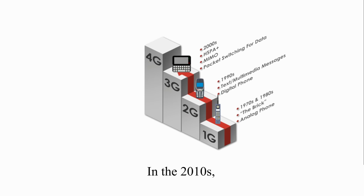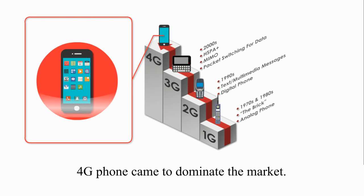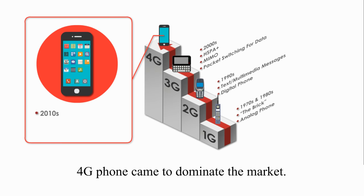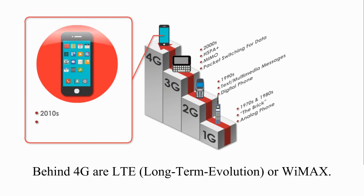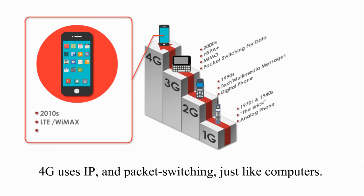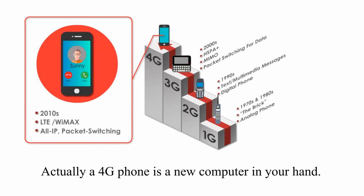In the 2010s, 4G cell phones came to dominate the market. By the end of 2018, pretty much everyone except grandma and grandpa is using 4G cell phones. Behind 4G are LTE or WiMAX. 4G uses IP and packet switching just like computers. Actually, a 4G phone is a new computer in your hand.